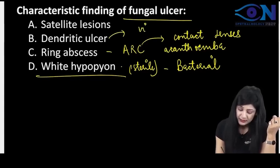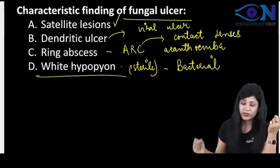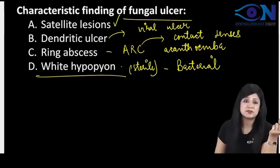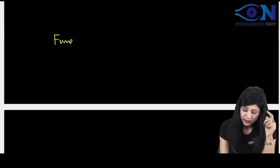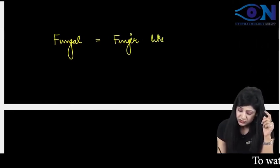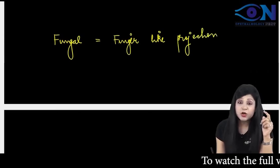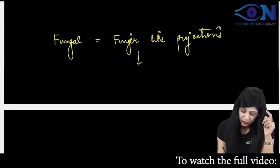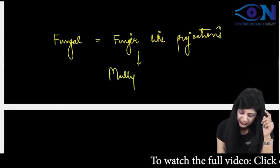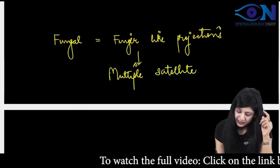D for dendritic ulcer — this is related to the viral ulcer. By diagnosis of exclusion, it is satellite lesions which are associated with the fungal ulcer. Always remember: F for fungal equals F for finger-like projections. And because of these finger-like projections, we will always get multiple satellite lesions.